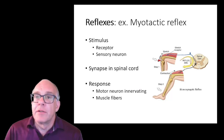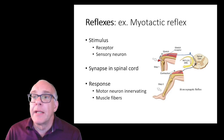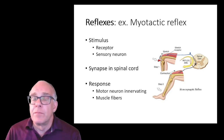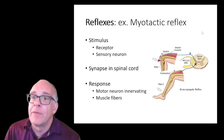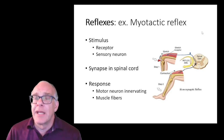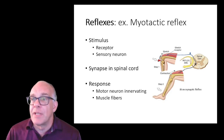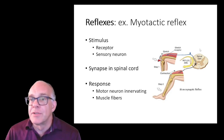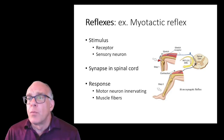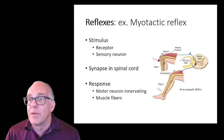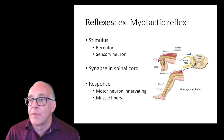Starting with some background: a reflex is an automatic response that occurs without higher levels of conscious perception or decision-making. It occurs locally — a stimulus in the periphery sends information into the spinal cord, and even though that information may be transmitted up to the brain, we're focusing on the local myotactic reflex, where the stimulus elicits a response within the spinal cord, transferring information to an effector motor neuron that goes out and causes stimulation of the muscle.